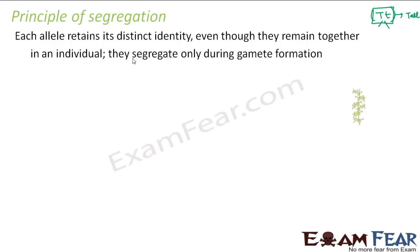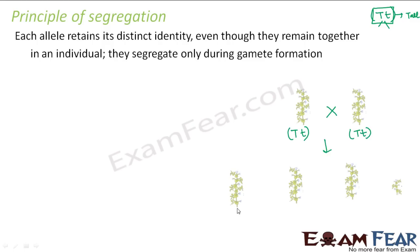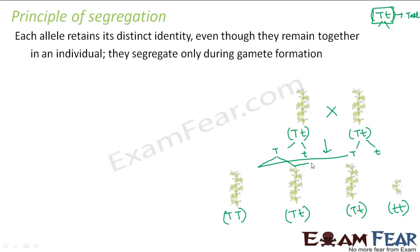When the F1 generation plant (capital T, small t) was self-pollinated, the result was one homozygous tall, two heterozygous tall, and one dwarf plant. The alleles separated out during gamete formation — capital T and small t — and then combined to produce these four plants. So each allele retains its identity even though they remain together in an individual. The word 'segregate' means to separate out, and the alleles separate only during gamete formation while retaining their identity.